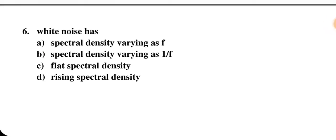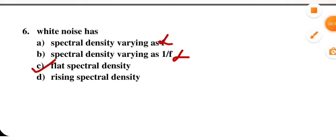Next question: white noise has — spectral density varying as f, spectral density varying as 1/f, flat spectral density, or rising spectral density? Just as white light contains all colors, white noise contains all frequency components in equal amounts. The power spectral density of white noise is independent of frequency, so it has a flat spectral density. C is the correct option.